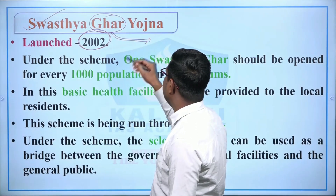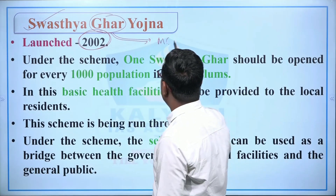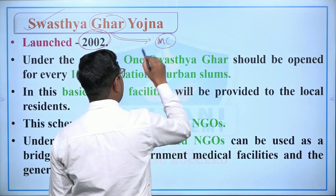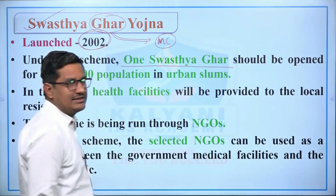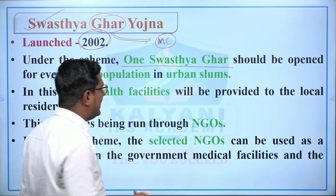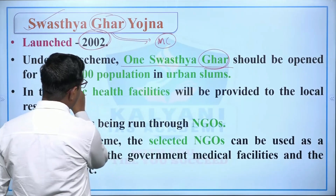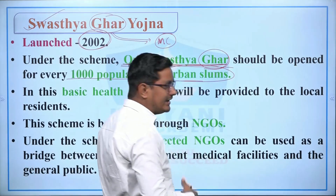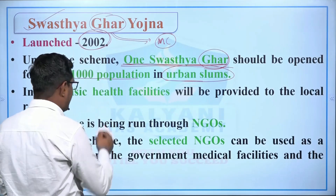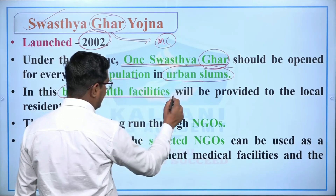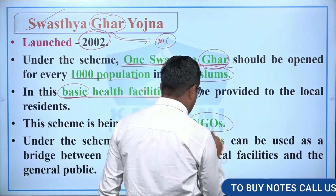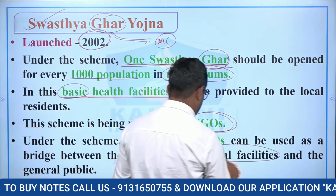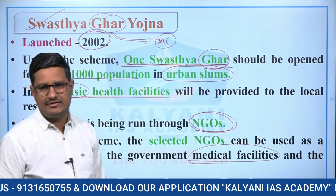The Swasth Ghar Yojana was launched in 2002. Under this scheme, one Swasth clinic would be opened for every thousand population in urban areas, so that basic health facilities are available to people. NGOs are selected by the government to arrange funds and medical facilities so that better health facilities can be provided.